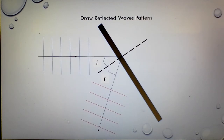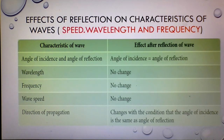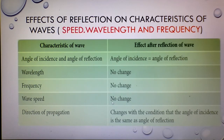So label the diagram: incident wave, normal line, reflected wave, angle of incidence, and angle of reflection. The effects of reflection on the characteristics of the wave: the angle of incidence equals the angle of reflection. Wavelength, frequency, and speed show no change. What changes is the direction of propagation, with the condition that the angle of incidence equals the angle of reflection.